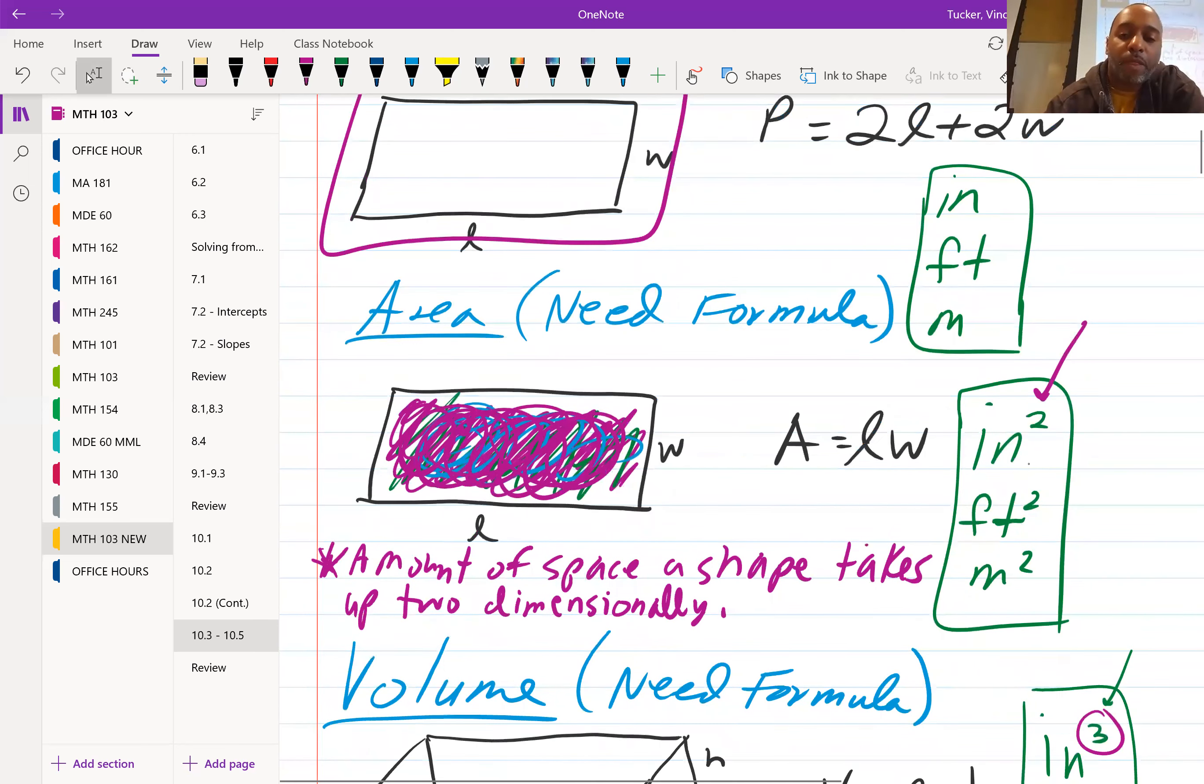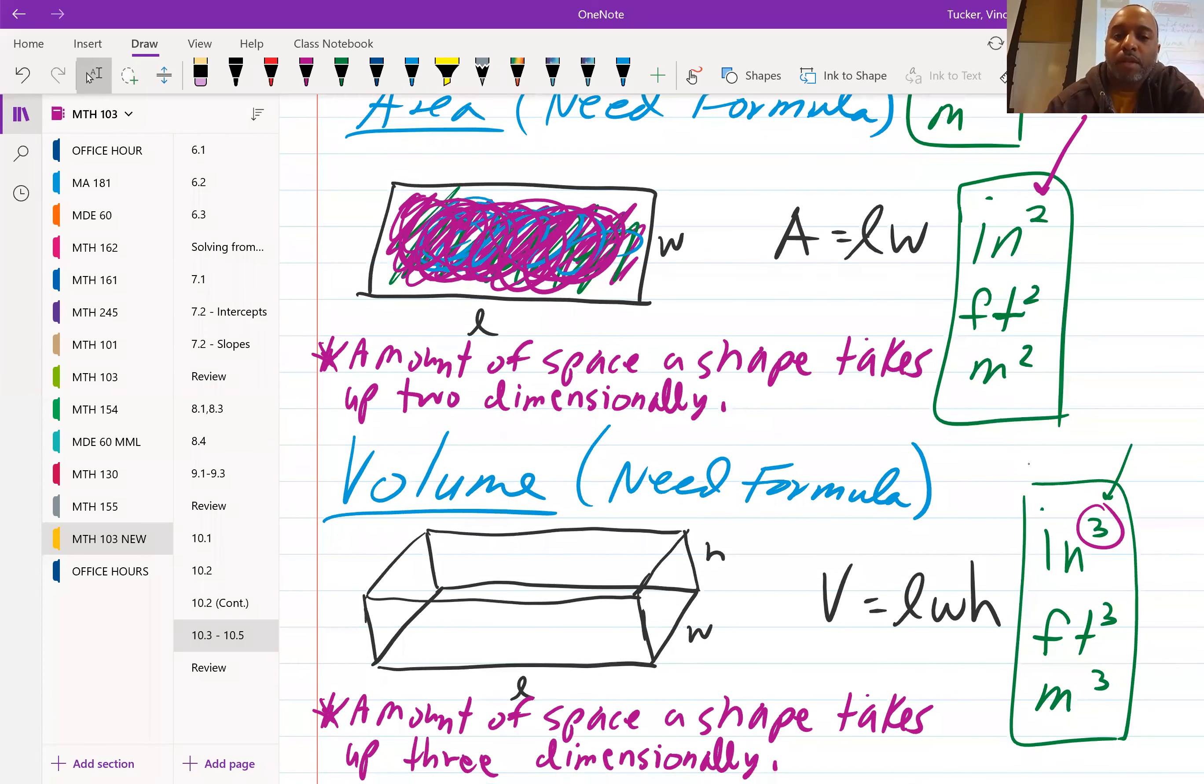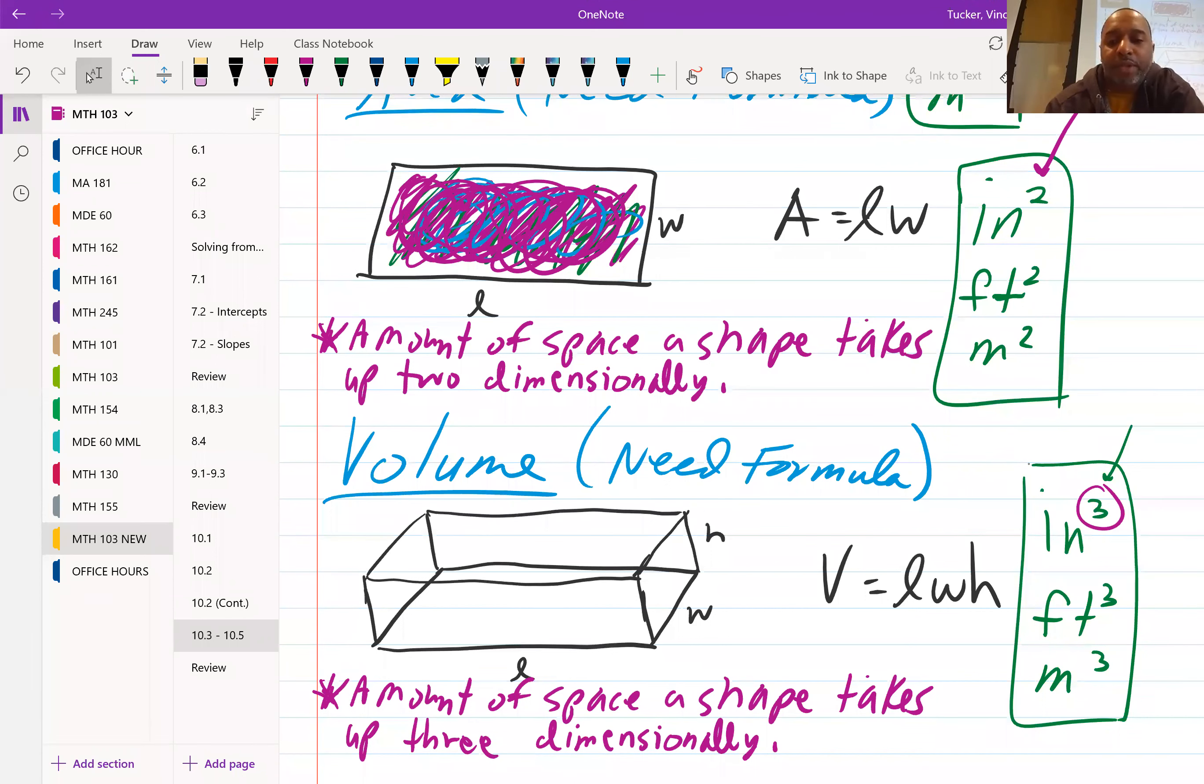And very similarly, the volume, you will need a formula for the volume, is the amount of space that a shape takes up three-dimensionally. So now notice is length times width times height. And then when you're done calculating, your measurement will be cubic or cubed. Any questions?